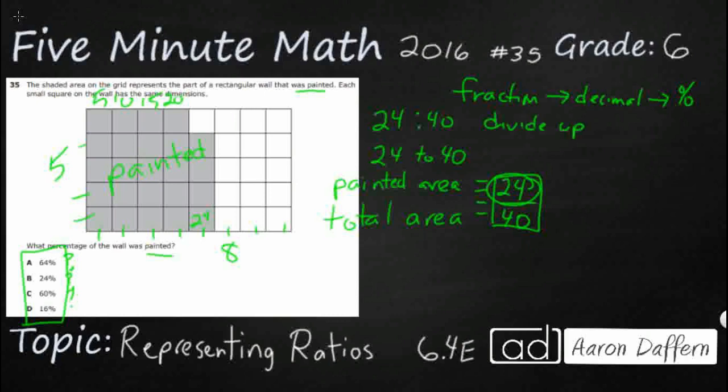And it seems simple, and it actually is. Divide up means you take your denominator, in this case 40, our total area. We're going to divide this up into 24.